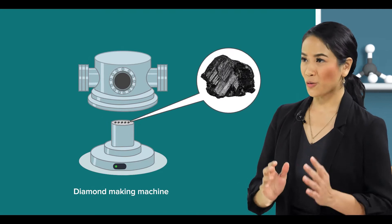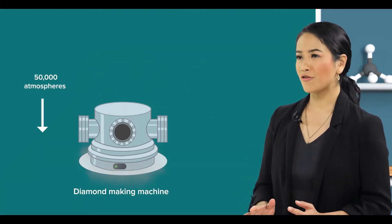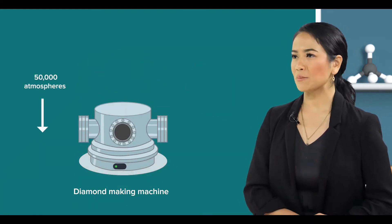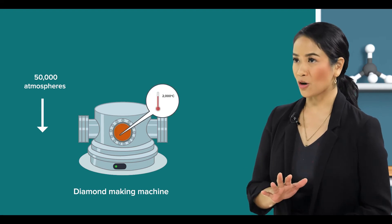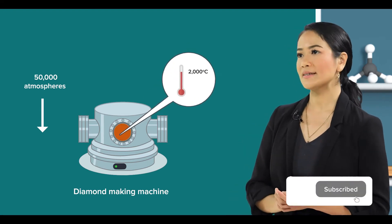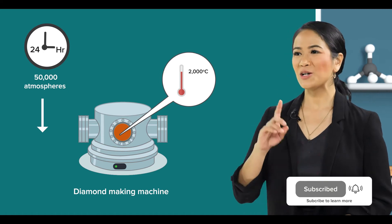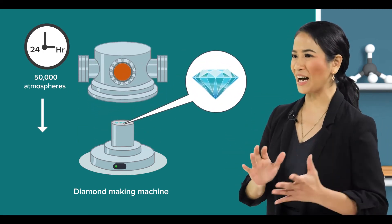Well, if you subject the graphite to a pressure of about 50,000 atmospheres and a temperature of 2,000 degrees Celsius for about 24 hours, you are on your way to getting diamonds.